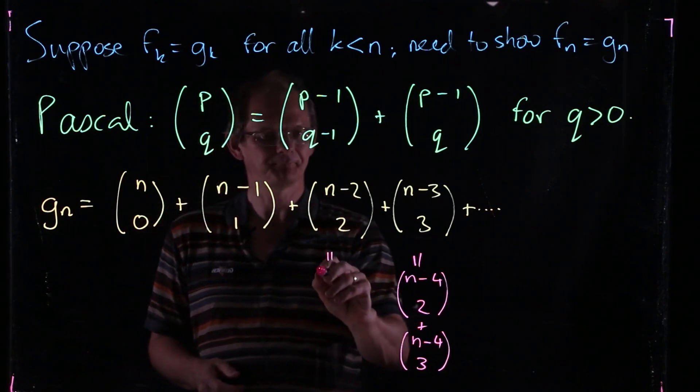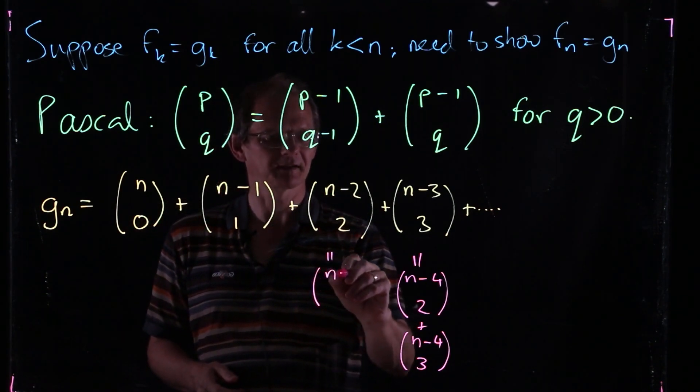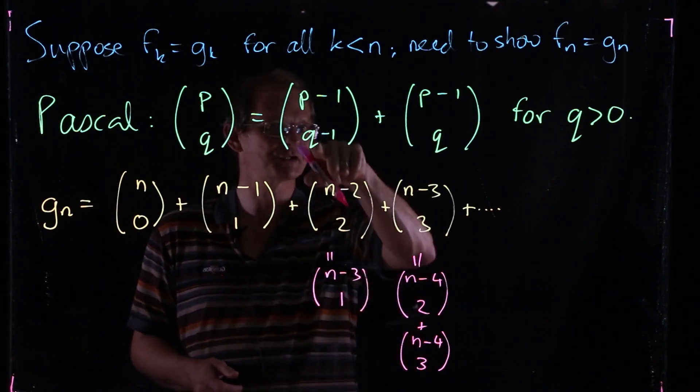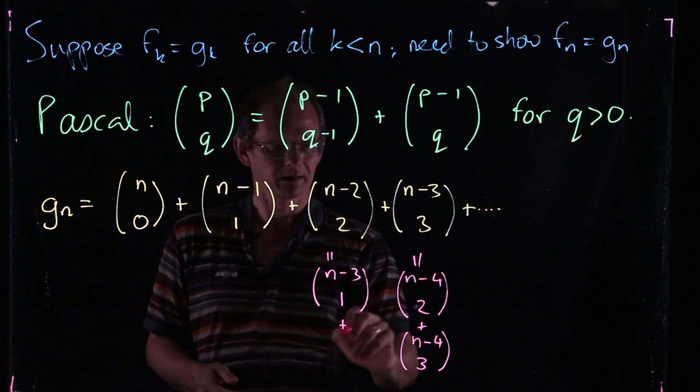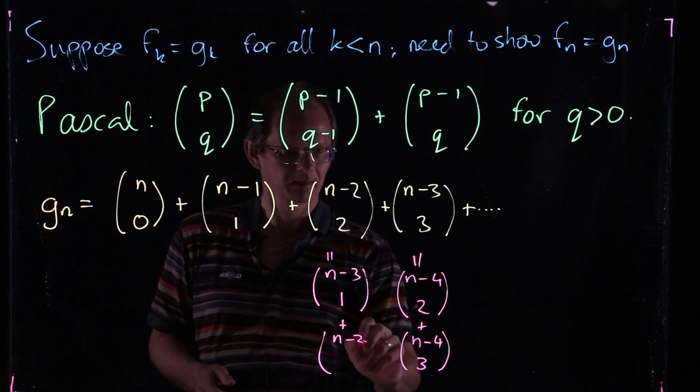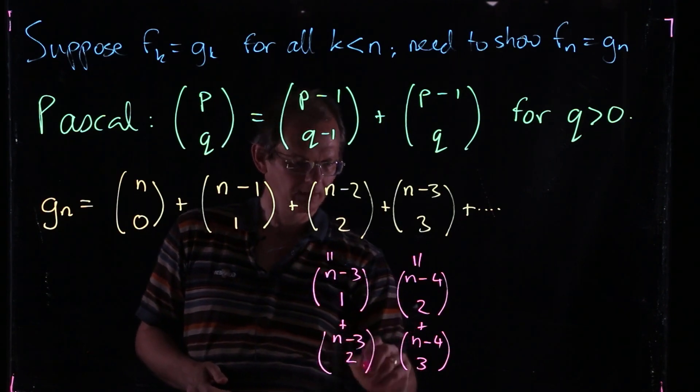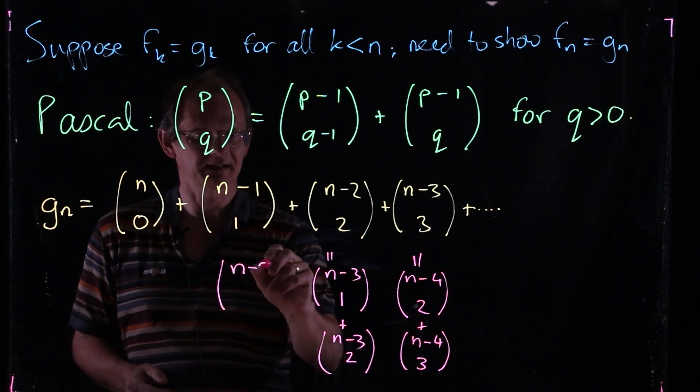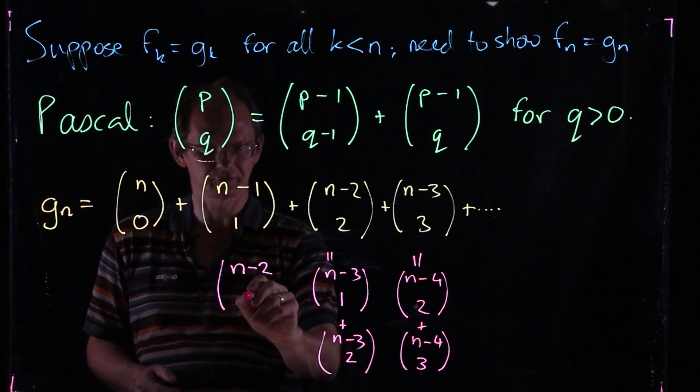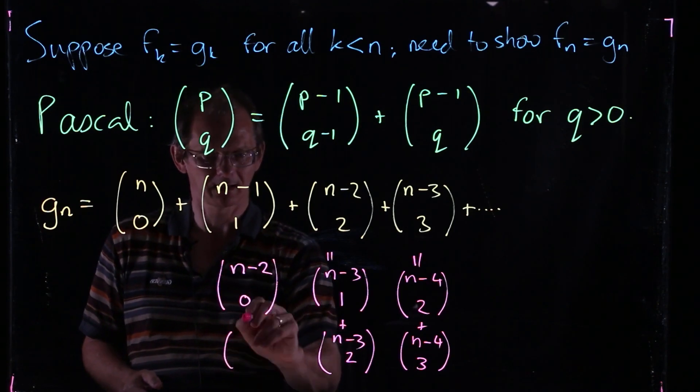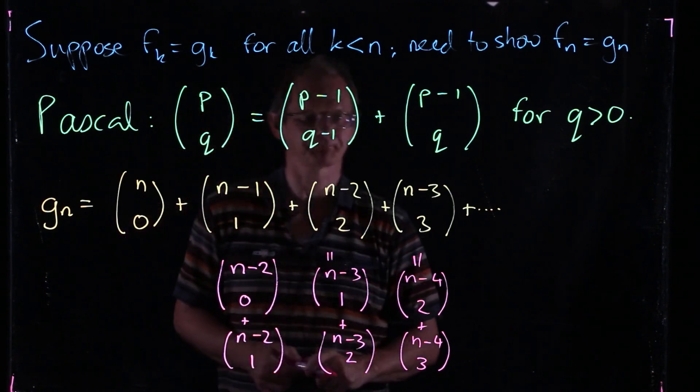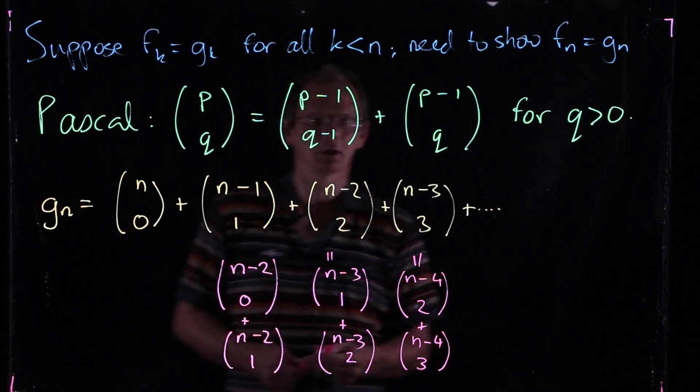And do the same thing here. And so you get n-3. And here we reduce the bottom index by 1. And the second one, we keep the bottom index the same. Same again here, n-2 here, and then here we reduce that down to 0. And here we leave it as it is.